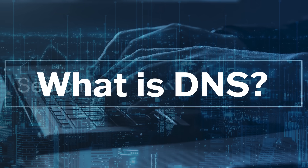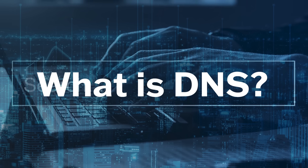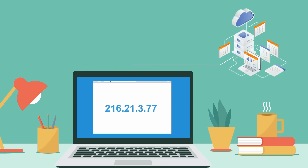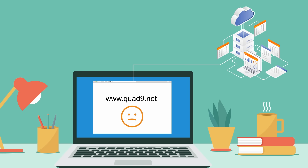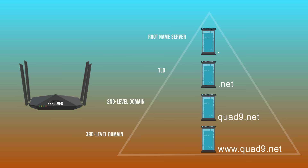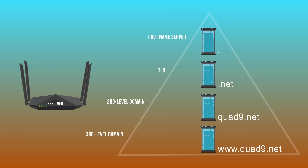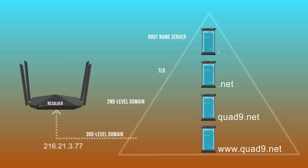DNS stands for Domain Name System. DNS acts as the phone book for the internet. Computers need IP addresses to communicate with each other — they don't actually understand names. So what DNS does is translate the names you're most commonly familiar with, like www.quad9.net, into an IP address. The way DNS does this lookup is you contact a series of different authoritative name servers, and ask each where to find a separate piece of the URL, until finally you reach the authoritative name server responsible for maintaining a record of the IP address for the website you're trying to visit.